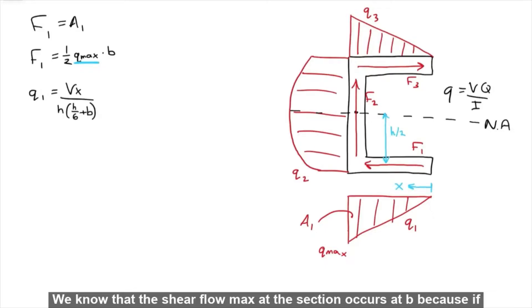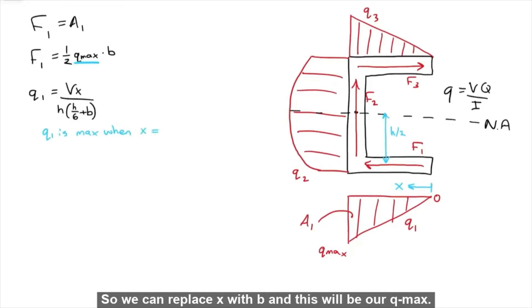We know that the shear flow max at this section occurs at B, because if the shear flow is going towards the left, the right end would be 0, meaning the left side would be the max, since it is increasing linearly. So we can replace X with B, and this will be our Q max. Keep in mind that B is the length for the bottom portion.